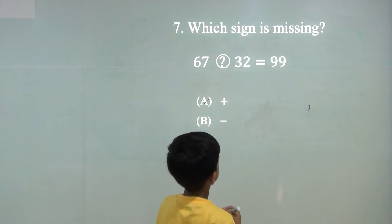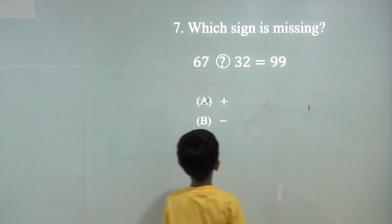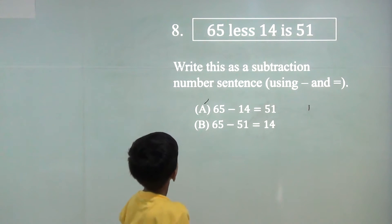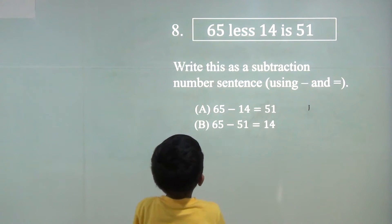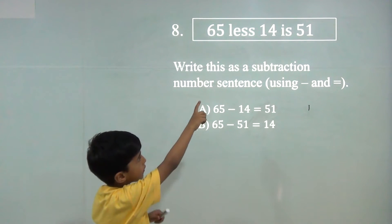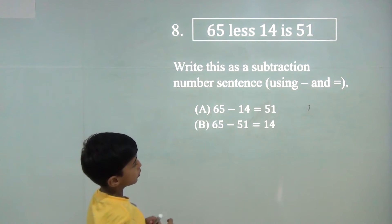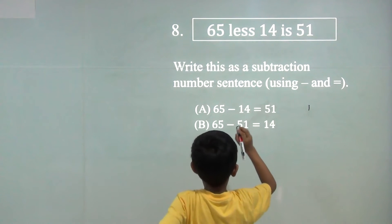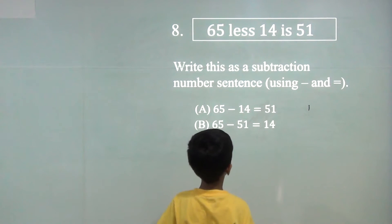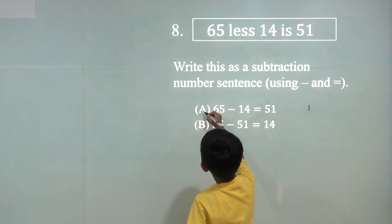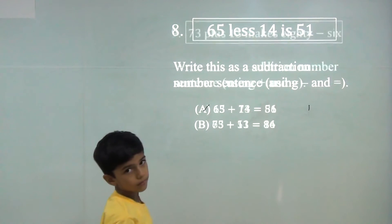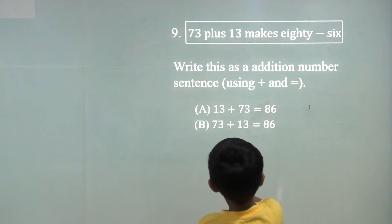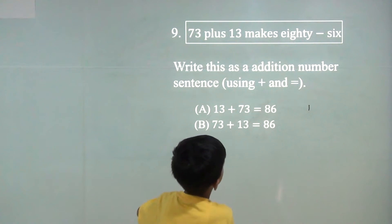67 plus, because here is a bigger number, so the answer would be 21. 65 less than 14 is 51. So we will do 65 minus 14, it's 51. And we can do it. 73 plus 16 is 86.